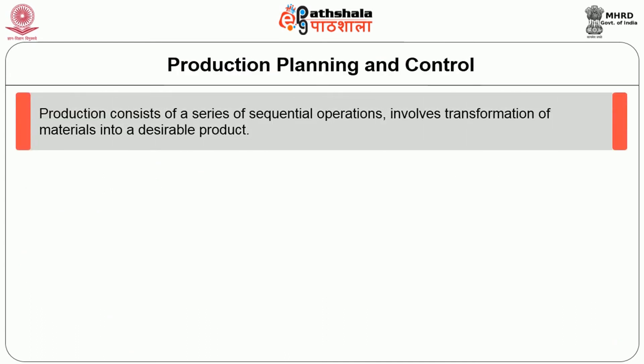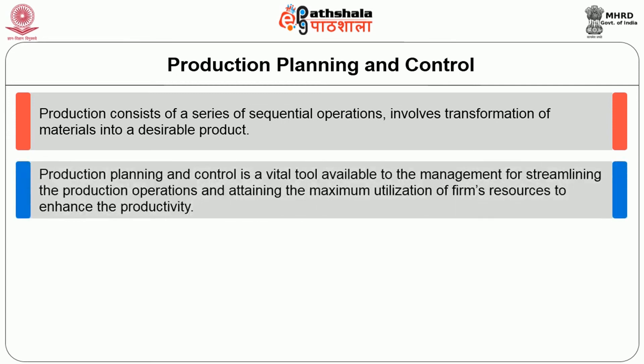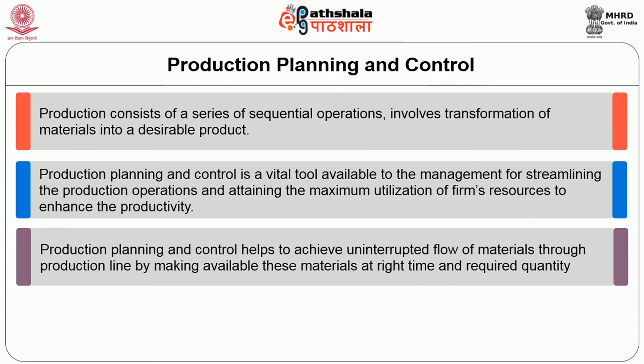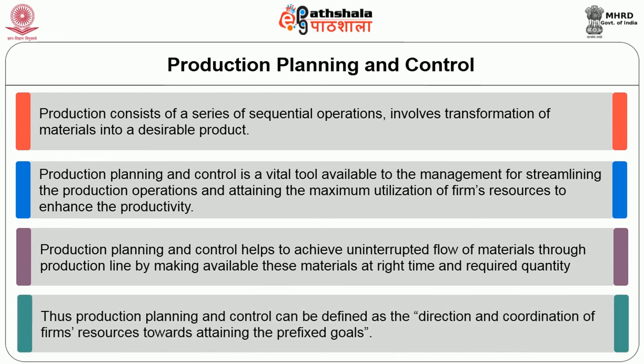Production planning and control. Production consists of a series of sequential operations involving transformation of materials into a desirable product. Production planning and control is a vital role available to management for streamlining the production operation and attaining the maximum utilization of the firm's resources to enhance productivity. Production planning and control helps to achieve uninterrupted flow of materials through the production line by making available these materials at the right time and required quantity. Thus, production planning and control can be defined as the direction and coordination of a firm's resources towards attaining prefixed goals.